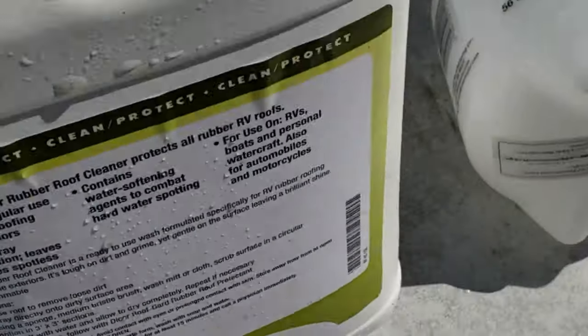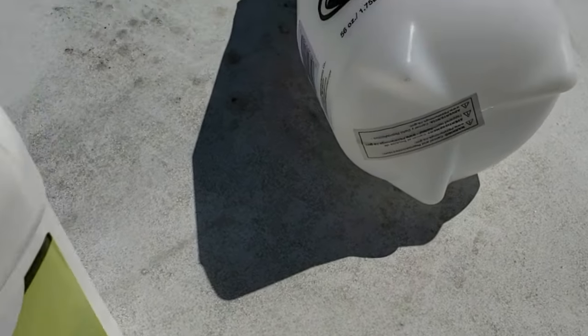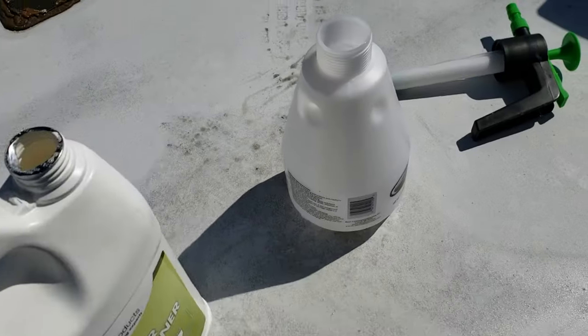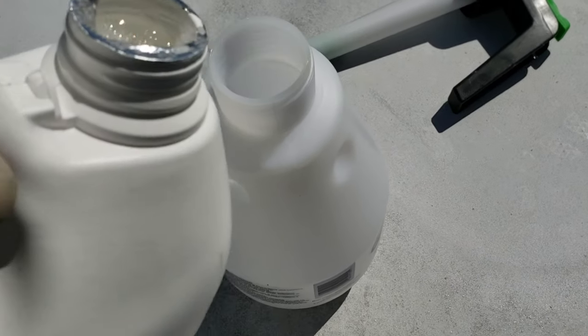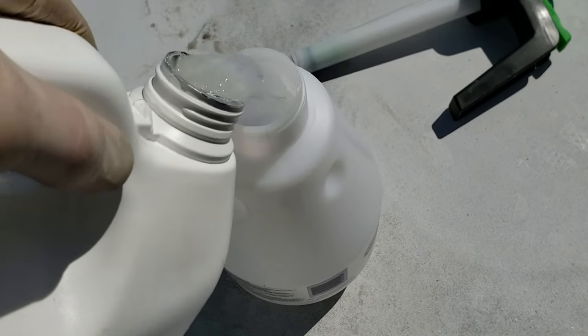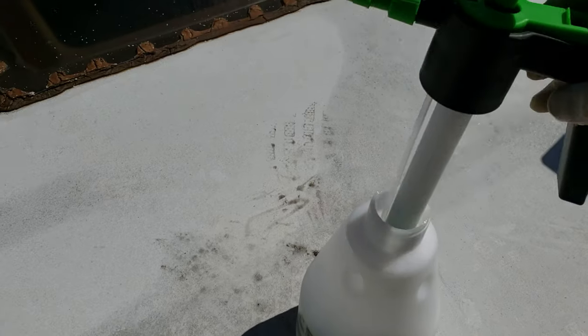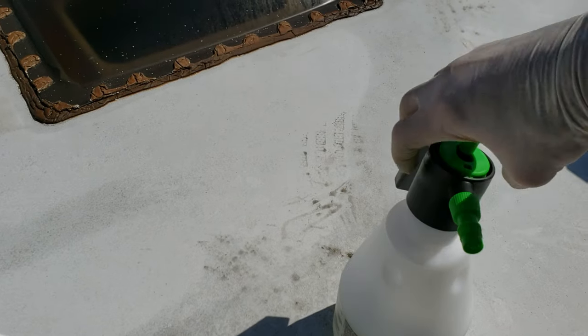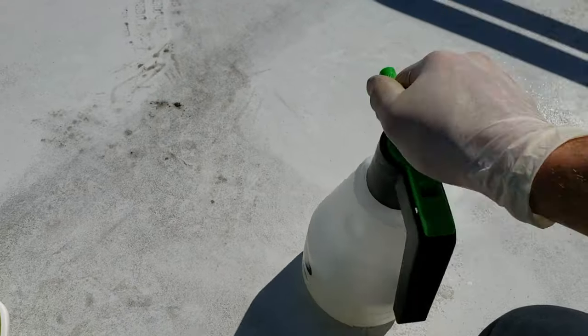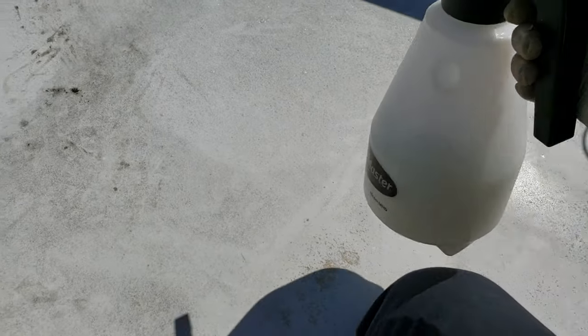So back to those directions, what we're going to do is pour the cleaner into the sprayer right there, undiluted, and then we're going to spray it liberally on the roof. We've already pre-rinsed it. That'll help it interact with the rubber roof a little bit better.